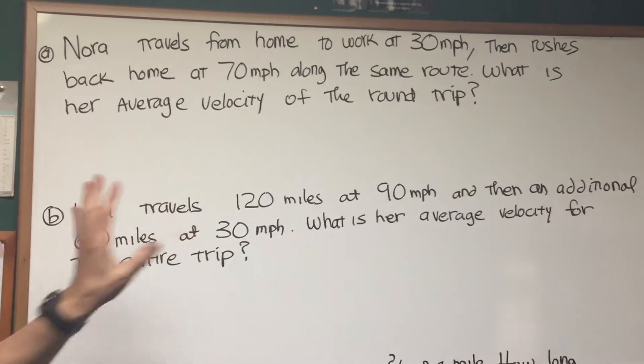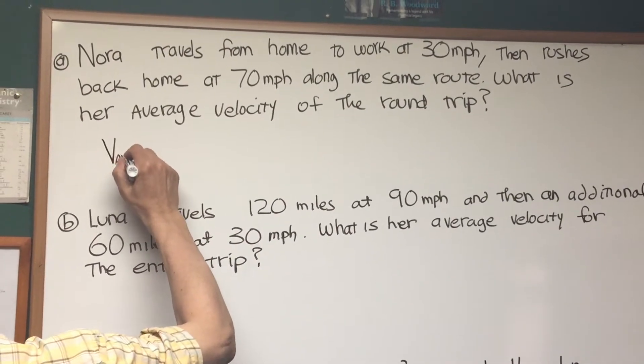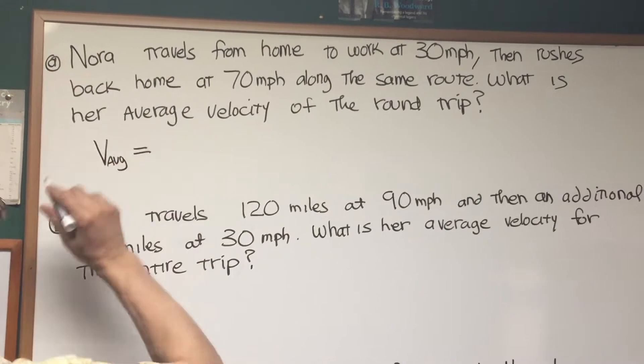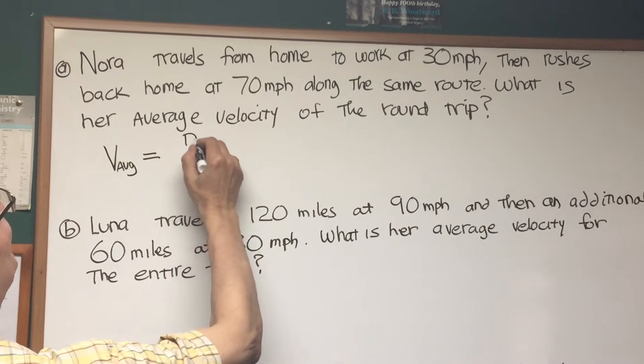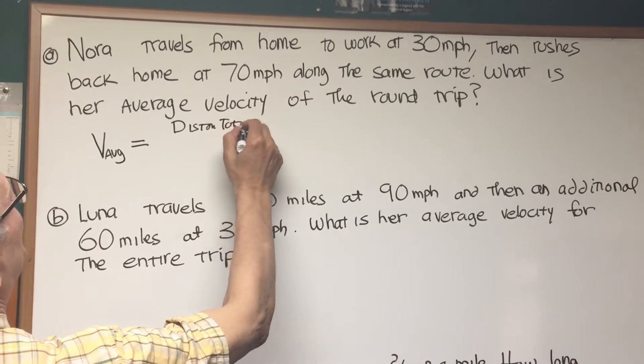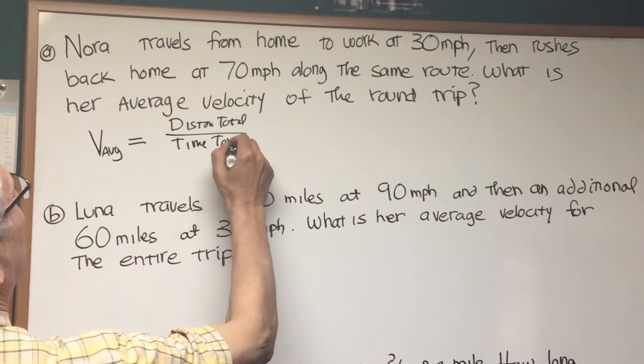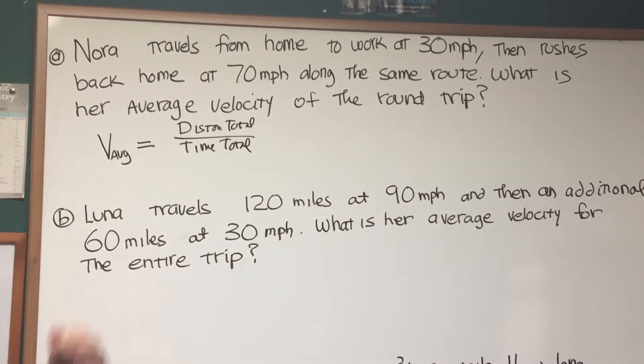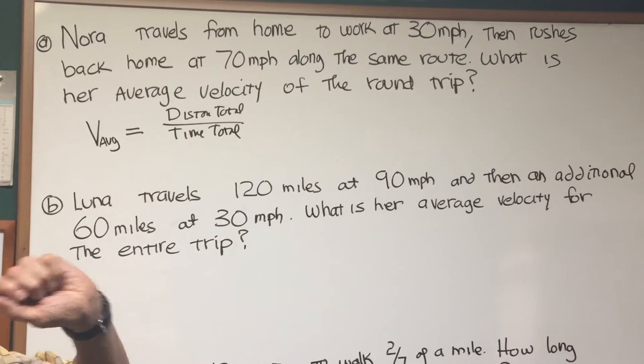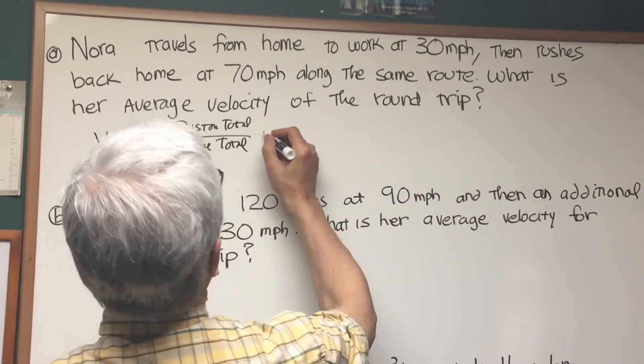This is why it's important to do this kind of a problem because we want to get the formula for average velocity. The formula for average velocity is the distance total, the total distance over time total, the total amount of time that it took to travel that distance. So keep that in mind. It's total distance over total time. Now what do we have?